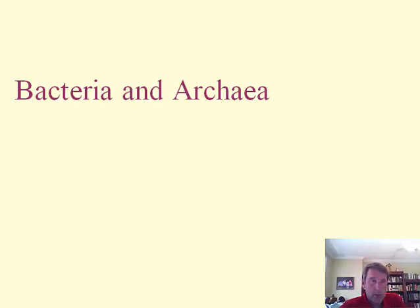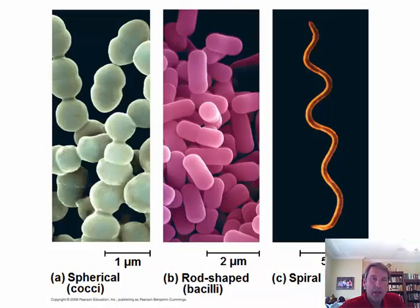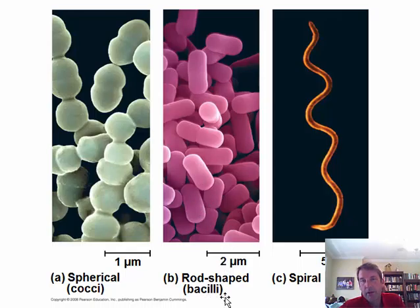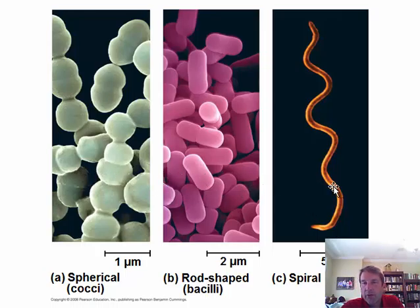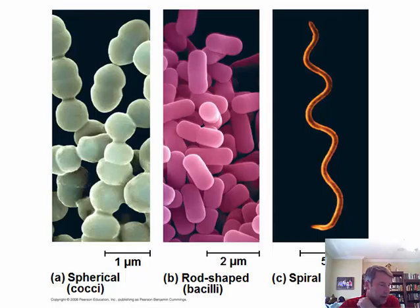Within the domain Bacteria, we can recognize bacteria as having one of three shapes — that's one of the major ways of categorizing them. The three shapes are: round or spherical shapes called cocci, rod-shaped bacteria called bacilli, and a spiral shape called spirals or sometimes spirochetes. All bacteria fall into one of these three categories: round cells, rod-like cells, or spiral-shaped cells.